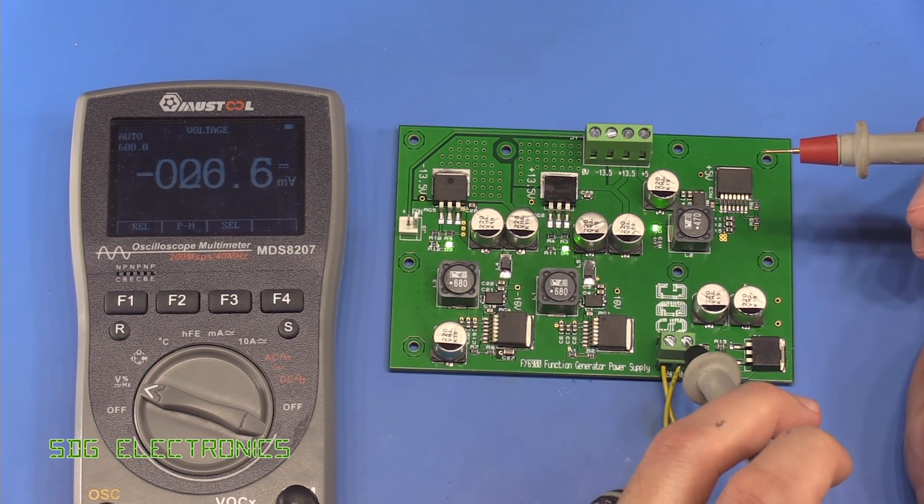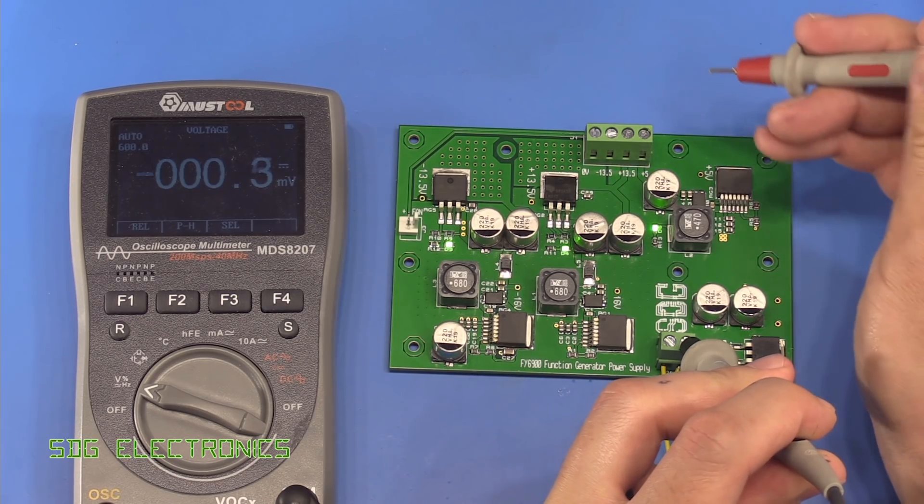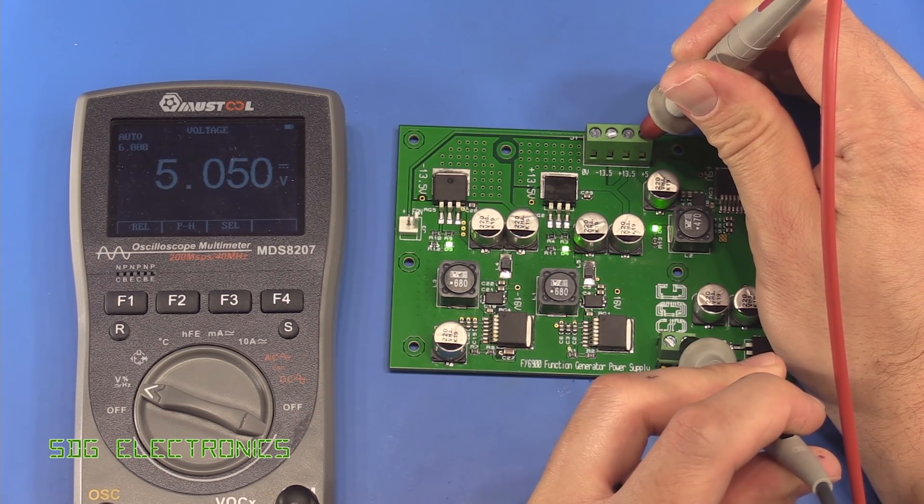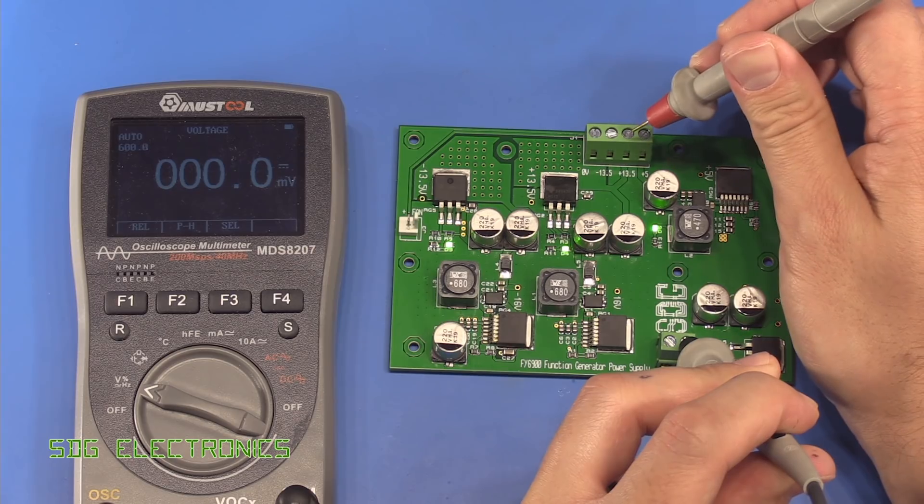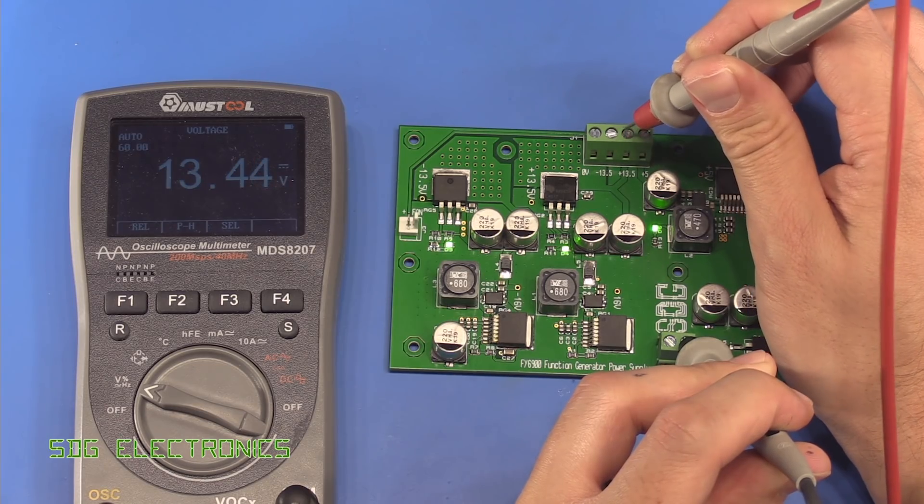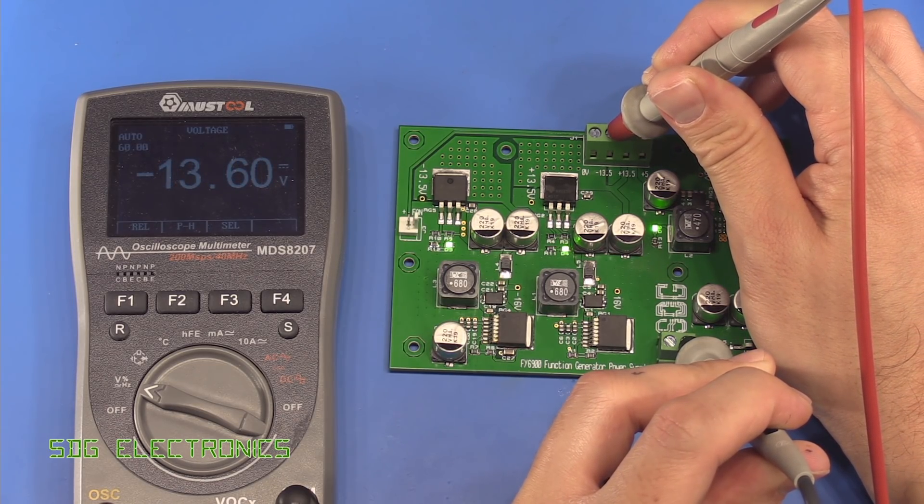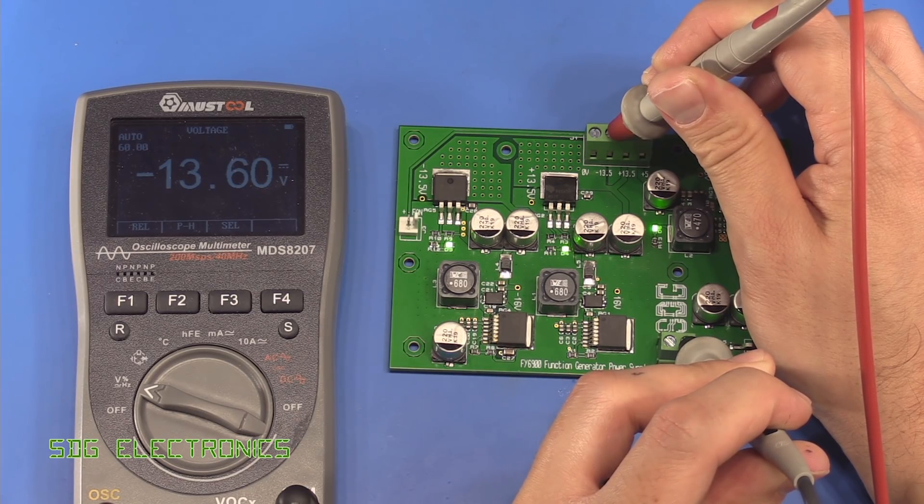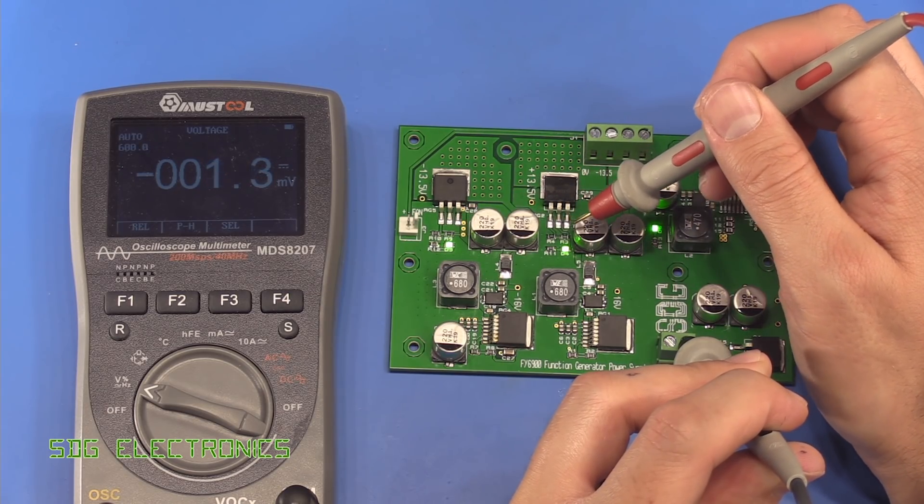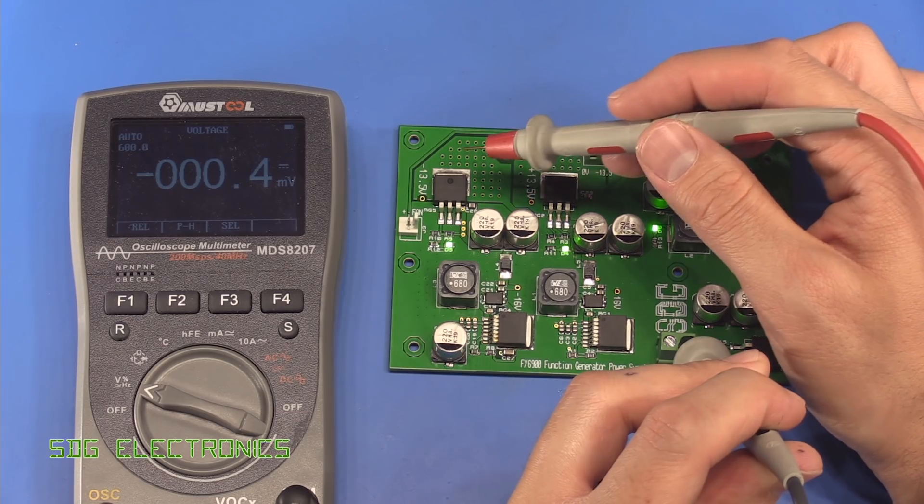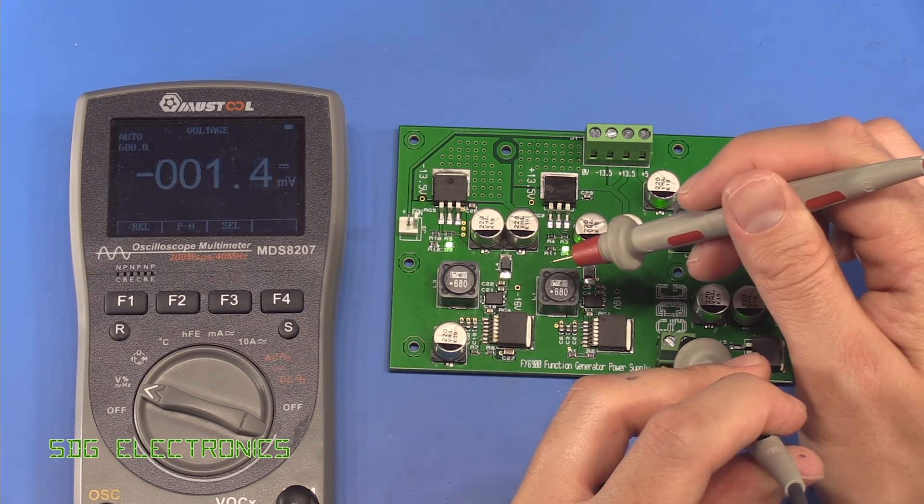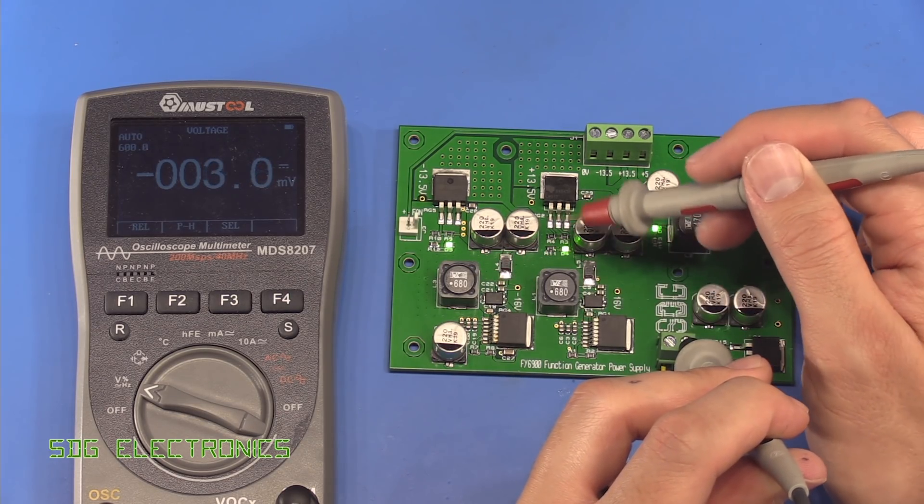We'll just check the output voltages. I've got the digital multimeter here, the Must Tool MDS 8207. We'll look at the five volt rail and that's 5.049, so just a tiny amount over. Then we've got the two outputs from the linear regulators. So 13.45 just very slightly under there, and the negative one is minus 13.6. So about 0.1 volts out what I'd calculated.